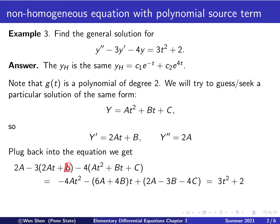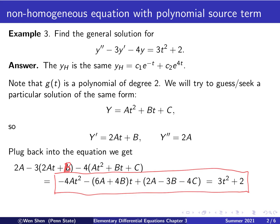Collecting all terms containing t squared, we have just one term. Then collecting terms with t, we have two terms: negative 6A and negative 4B, so we get (negative 6A minus 4B)·t. The constant terms are 2A minus 3B minus 4C. This left-hand side must equal the right-hand side, which is 3t squared plus 2. So we have found an equation that must hold for our choices of A, B, and C.